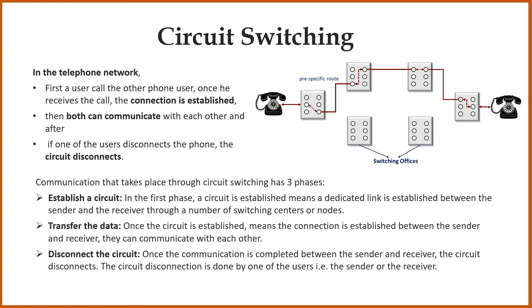The communication that takes place through circuit switching has three phases. First, we establish a circuit. Once the circuit is established, we can transfer the data. And once the communication is completed, the circuit disconnects, which is done by one of the users.